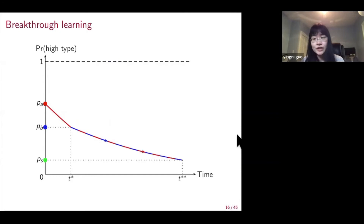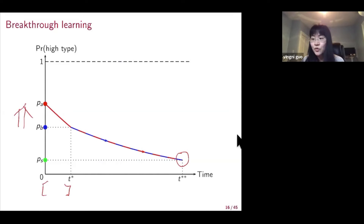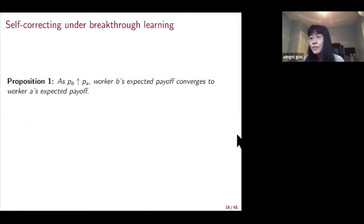If neither worker generates a breakthrough, after a long period the belief drops to the safe arm level and the employer fires both. This dynamic shows that the employer gives worker A a grace period from zero to T-star. As PB goes to PA, as the two workers become more and more similar, this grace period shrinks to zero. This is exactly why the breakthrough learning environment is self-correcting: when PB is going to PA, worker B's expected payoff converges to worker A's expected payoff because the grace period is shrinking to zero.